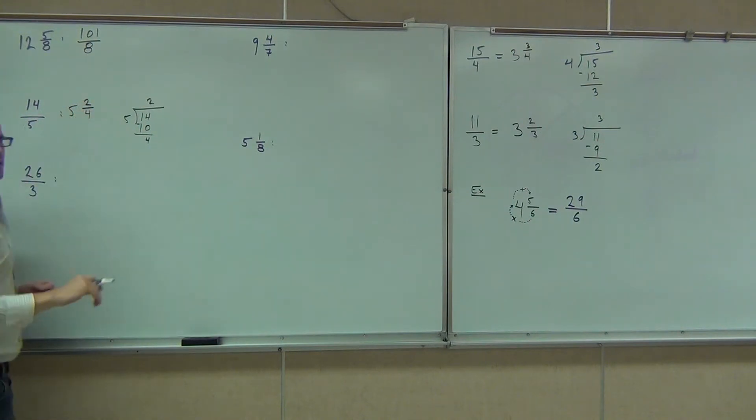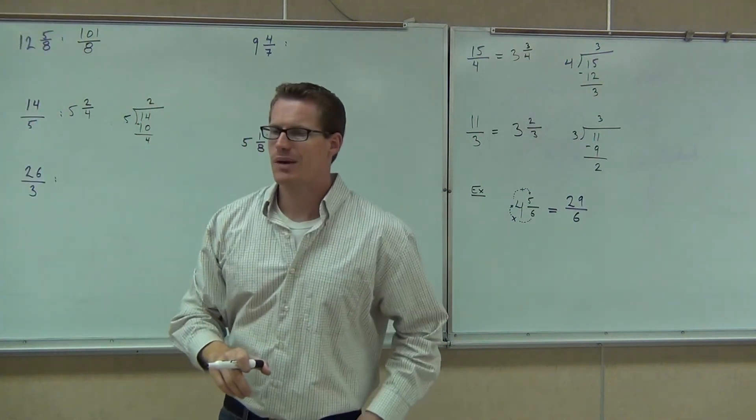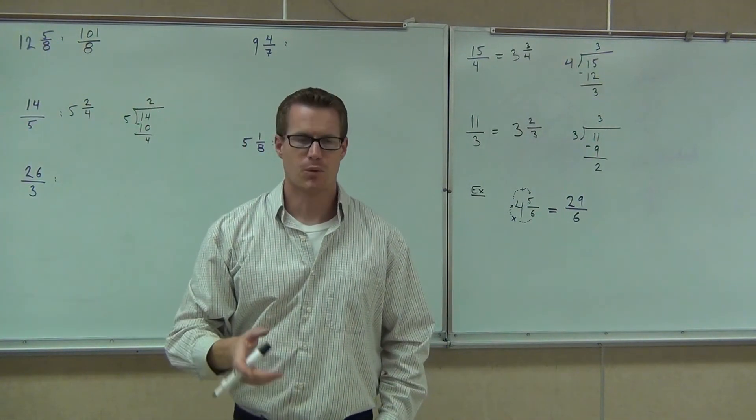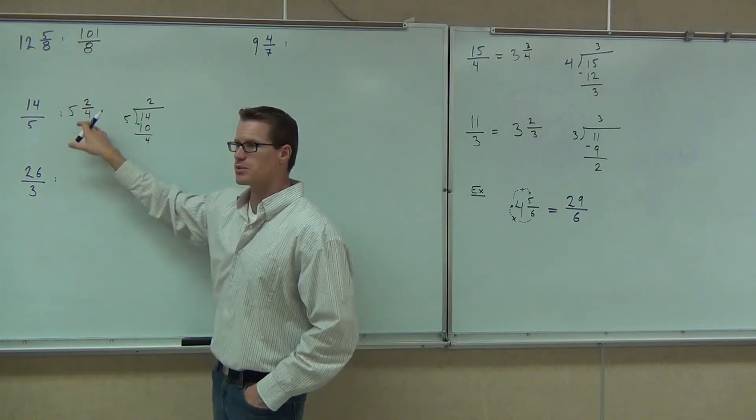So we're going to have 5 and 2 fourths. How many got both those right? Good. 5 and 2 fourths. Now we haven't talked about simplifying, but we're going to do that in the next section, maybe in about 5 minutes. We'll be able to make this a little bit simpler.